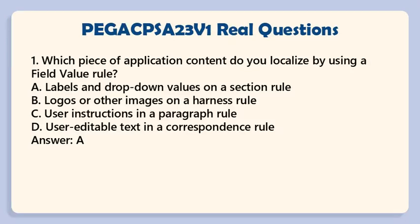Question 1: Which piece of application content do you localize by using a field value rule? a. Labels and drop-down values on a section rule. b. Logos or other images on a harness rule. c. User instructions in a paragraph rule. d. User editable text in a correspondence rule. Answer: a.